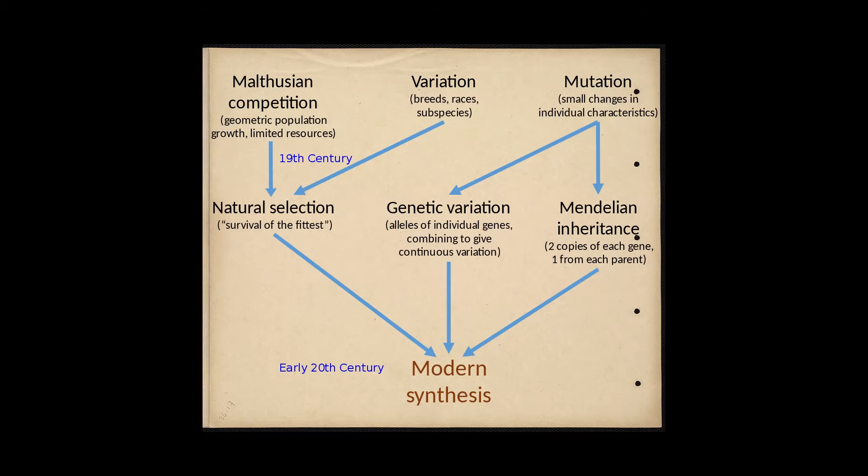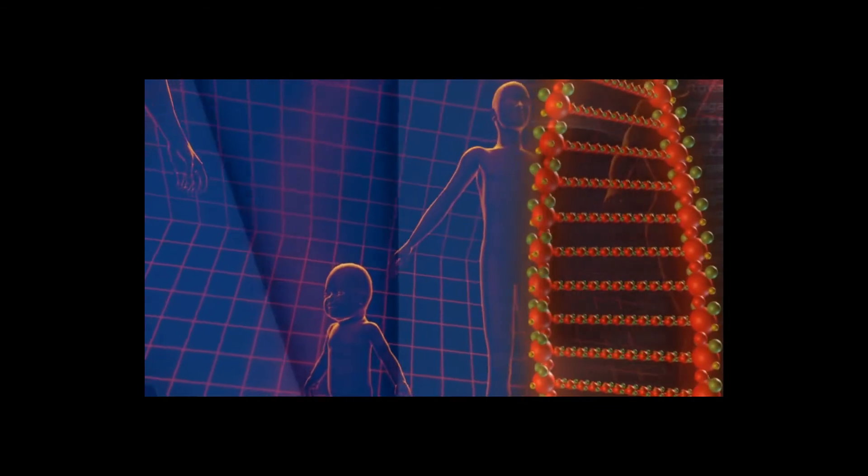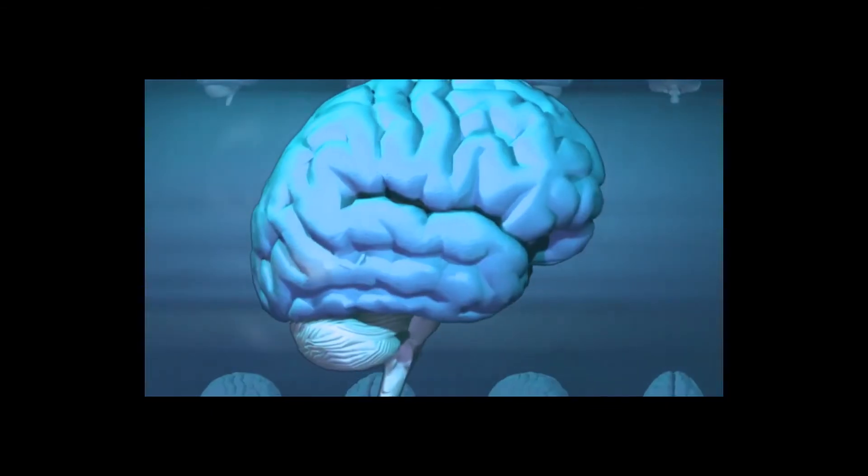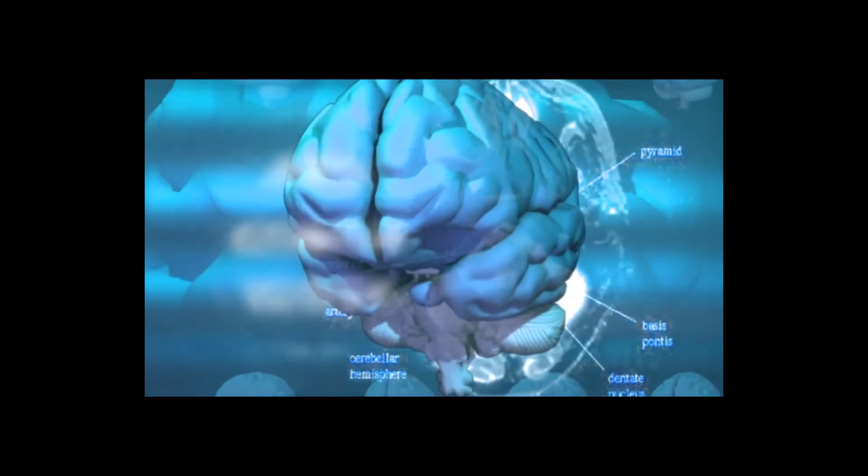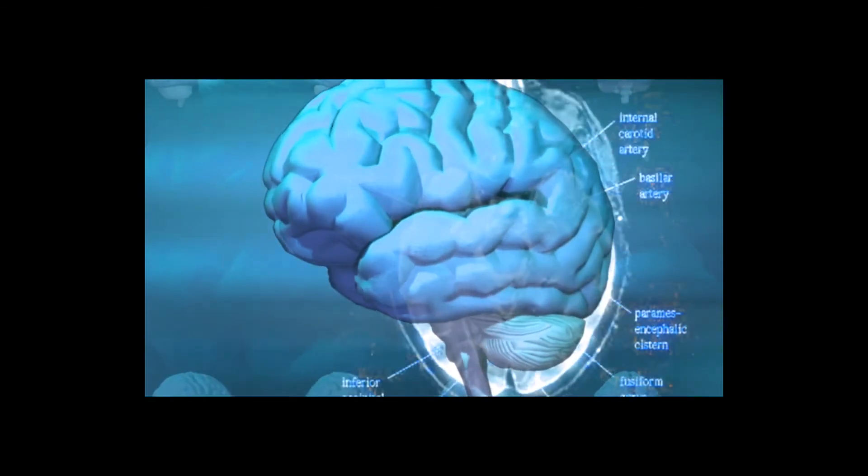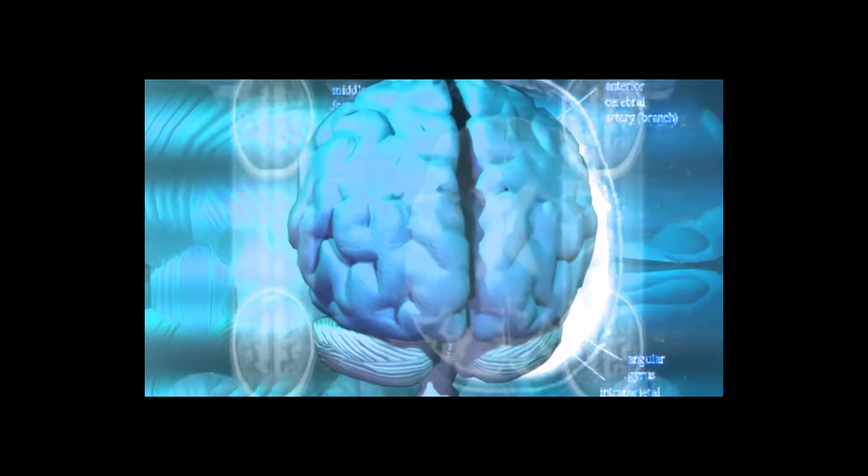But add dark DNA to the picture and that's not necessarily the case. If genes contained within these mutation hotspots have a greater chance of mutating than those elsewhere, they will display more variation on which natural selection can act. So the traits they confer will evolve faster. In other words, dark DNA could influence the direction of evolution, giving a driving role to mutation.